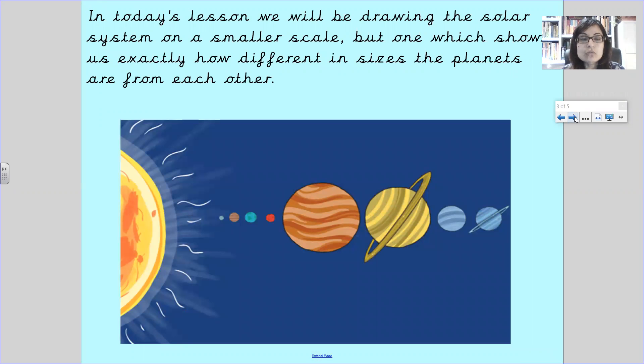In today's lesson you're going to draw the solar system on a smaller scale but one that shows us exactly how different in sizes the planets are from each other. As you can see from this picture you've got the Sun and then you've got all the planets in order. You can see that Jupiter is the largest planet and then you've got Mercury at the front which is the smallest, so you're going to draw this.